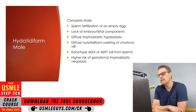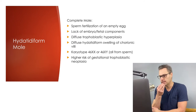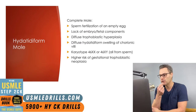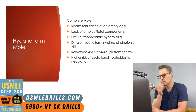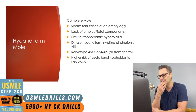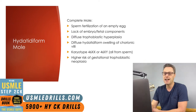Molar pregnancies can be either complete or incomplete, and they can be identified by some unique characteristics. Sperm fertilization of an empty egg results in a complete molar pregnancy. Characteristics include a lack of embryo or fetal components, diffuse trophoblastic hyperplasia, and diffuse hydatidiform swelling of the chorionic villi. The karyotype will be 46XX or 46XY, and because the egg was empty during fertilization, all chromosomes present are from the father. The risk of gestational trophoblastic neoplasia is higher in a complete molar pregnancy, with up to 1 in 5 becoming neoplastic.